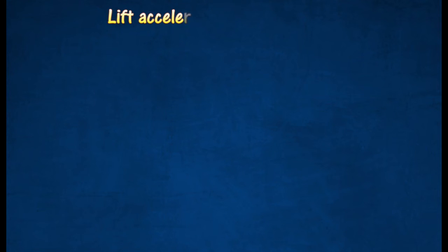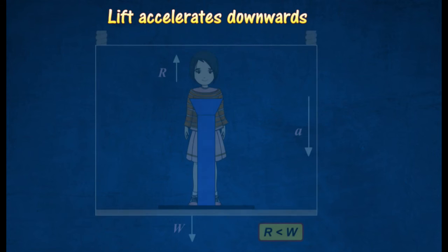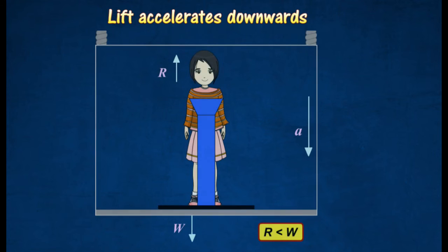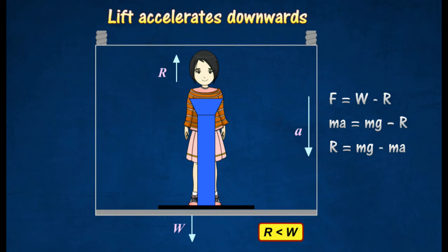If the lift accelerates downwards with an acceleration, the reaction force will be less than the weight of the girl. The resultant force will thus be given by the following equation. The girl will feel lighter.